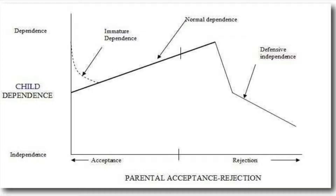When the attachment figure is not available and your brain — even as a child or adult — chooses to interpret that lack of availability as rejection, or conversely perceives their availability as acceptance, you develop a set of personality characteristics. Those characteristics fall along two dimensions: dependence and independence, and acceptance and rejection. IPAR theory looks at two dimensions of your relationship to your attachment figure: the warmth dimension and the dependence dimension.